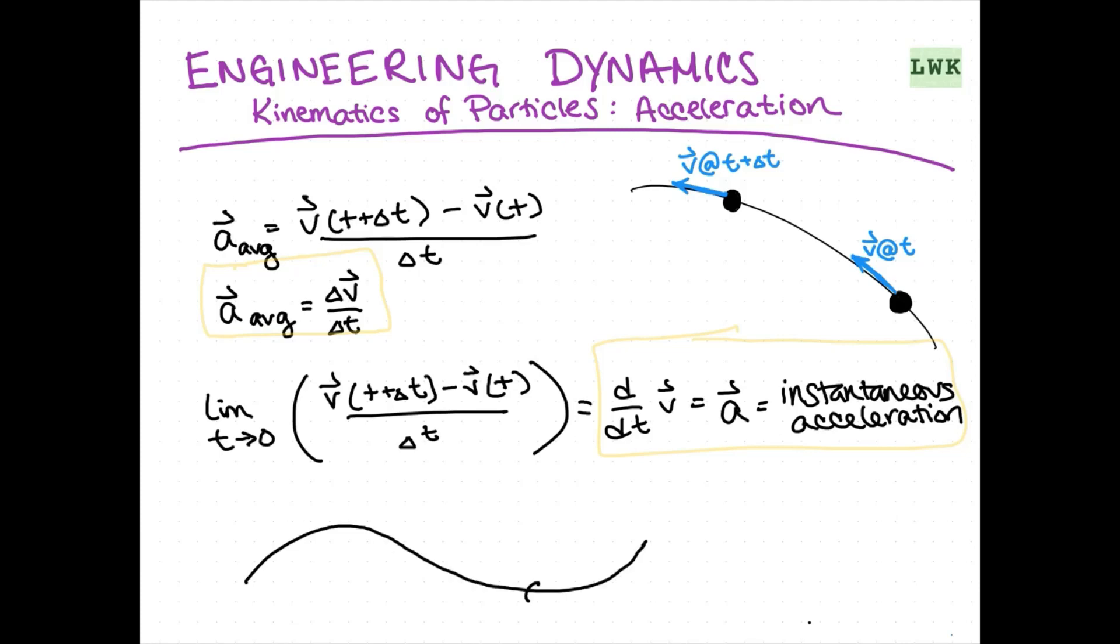So again, like velocity, we learned that on a curved path, your velocity is always going to be tangent to the path of motion. But our acceleration is always going to be going towards the concave side of the path.